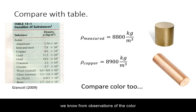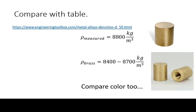However, we know from observations of the color that the object cannot be copper. Copper is distinctly red in color. Instead, we will try an alloy of copper, brass, because it will still have a similar density, but a more correct goldish color.